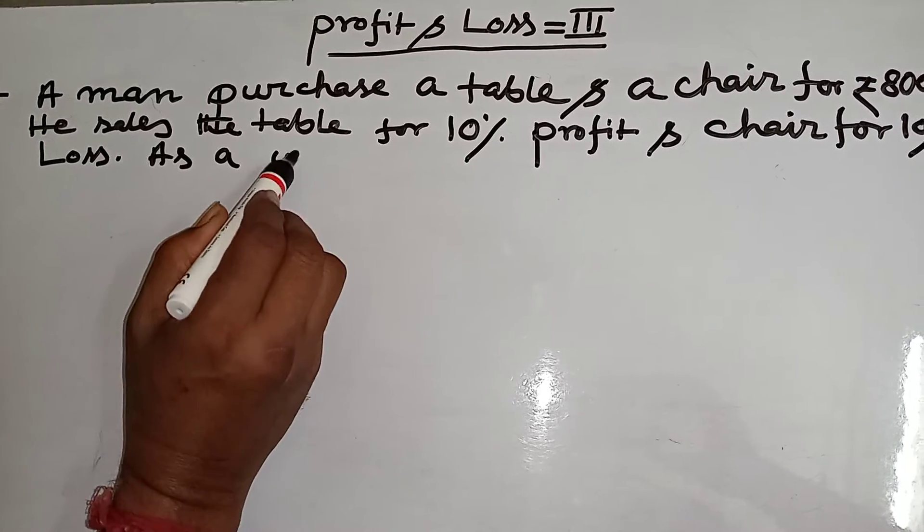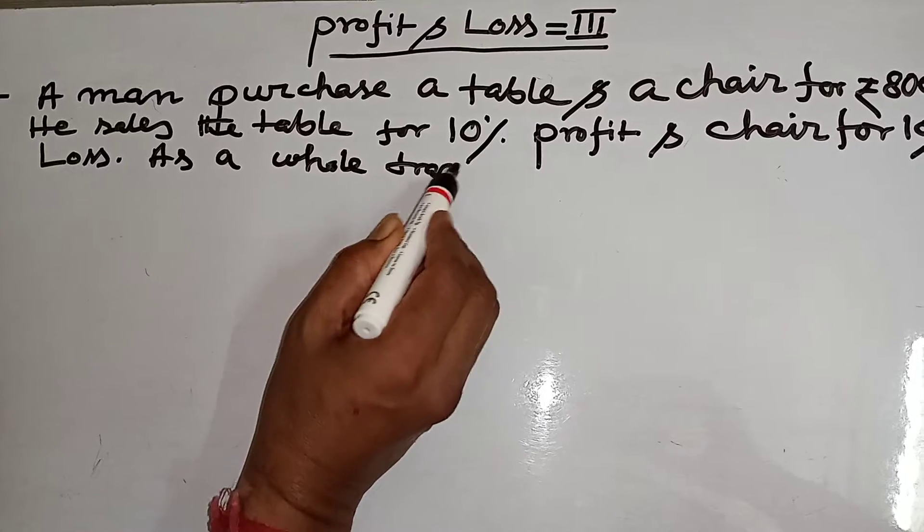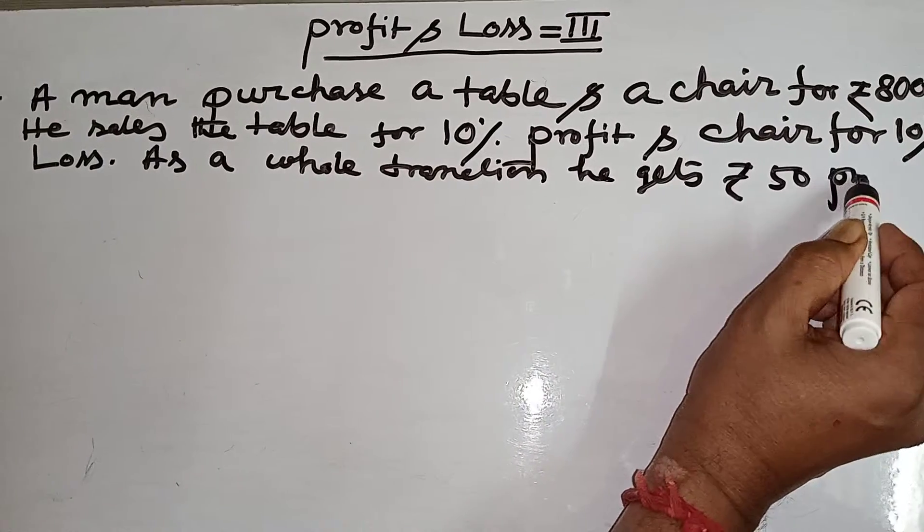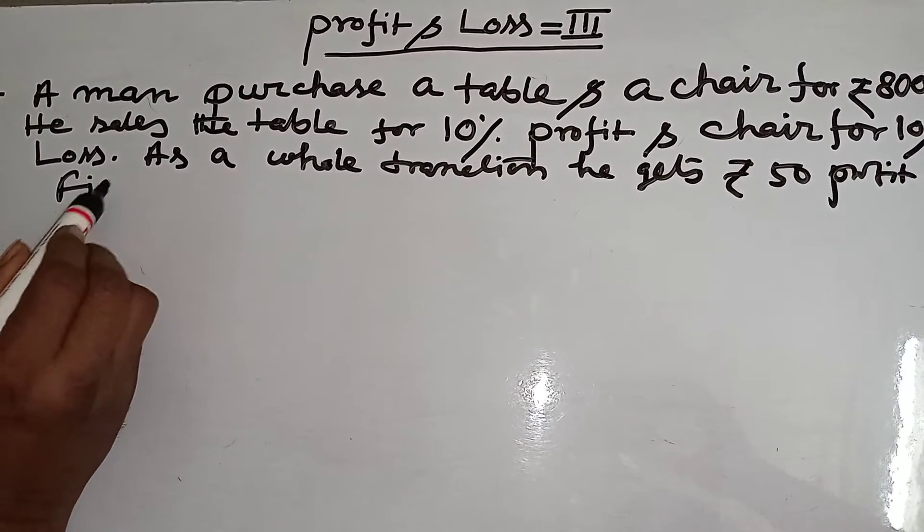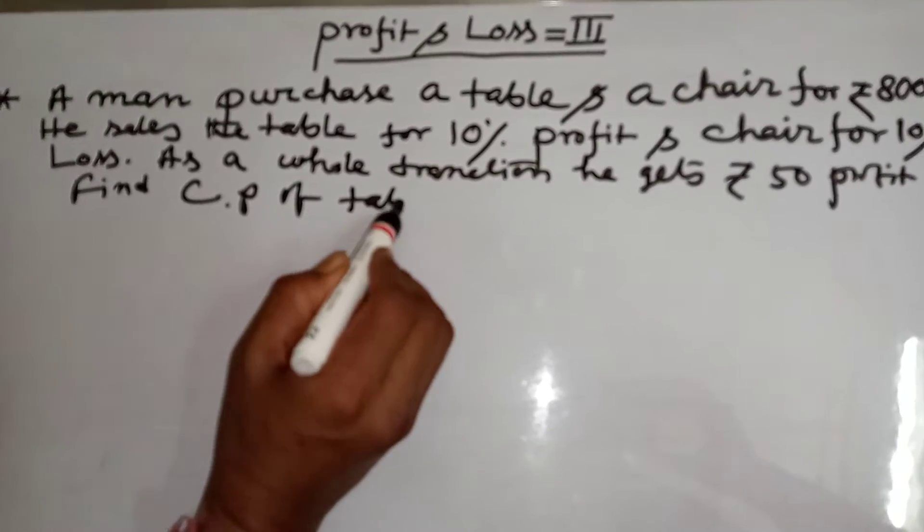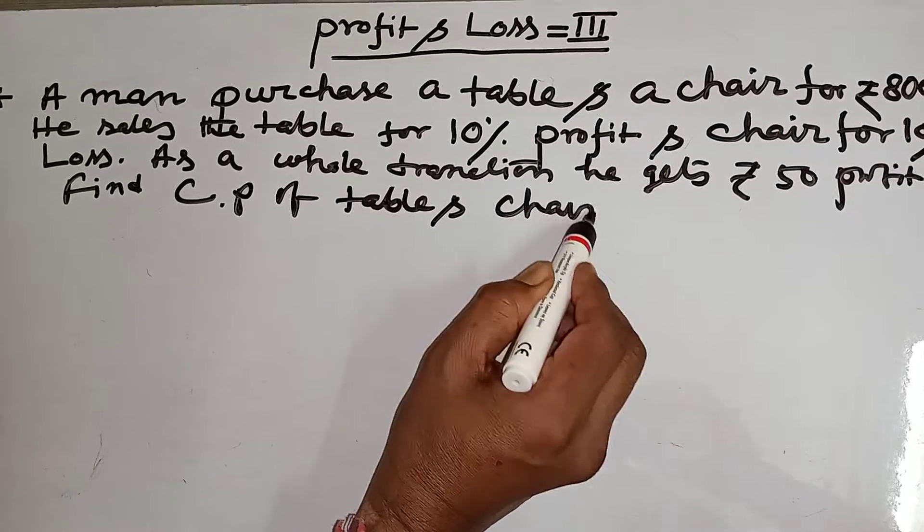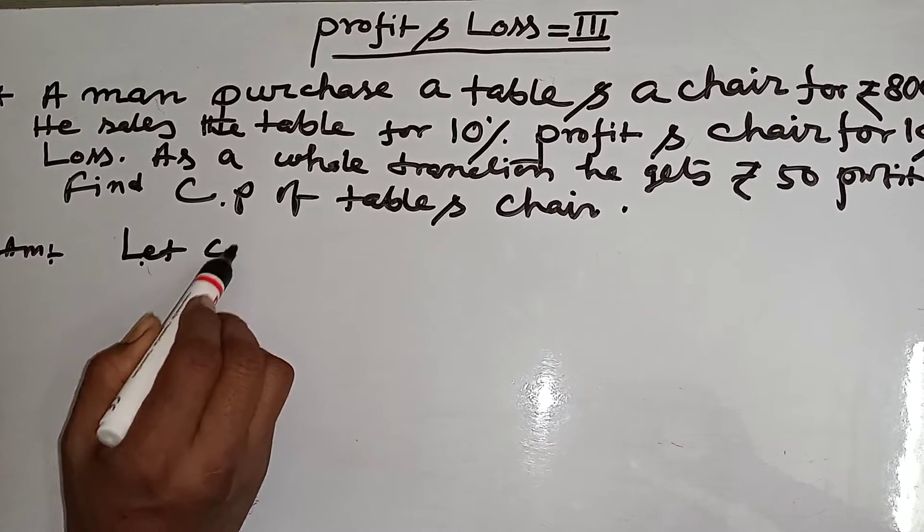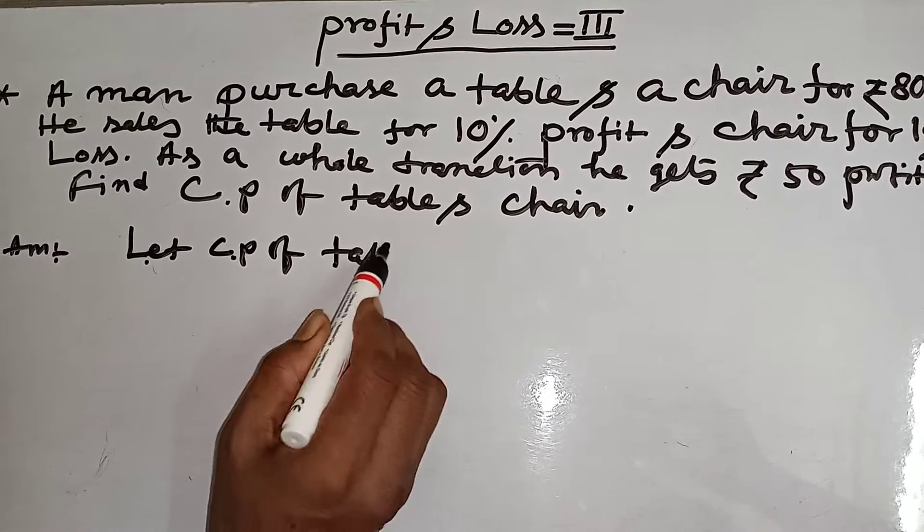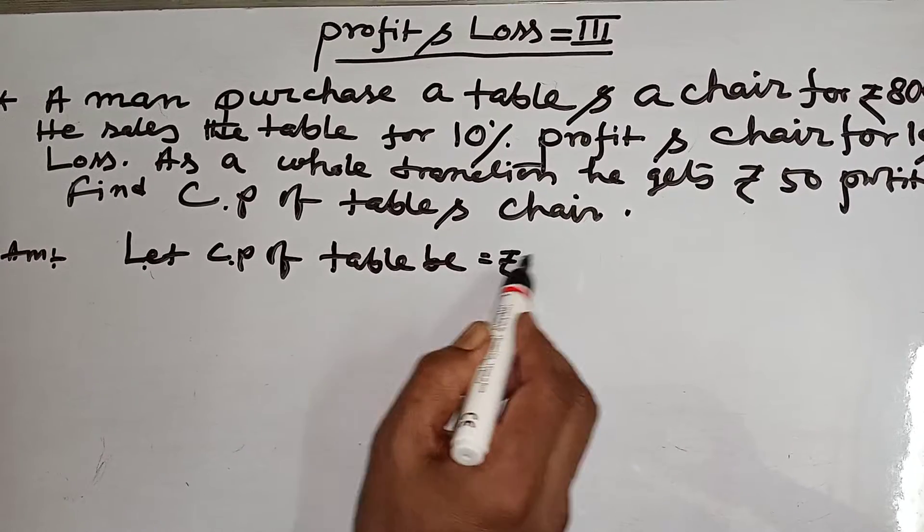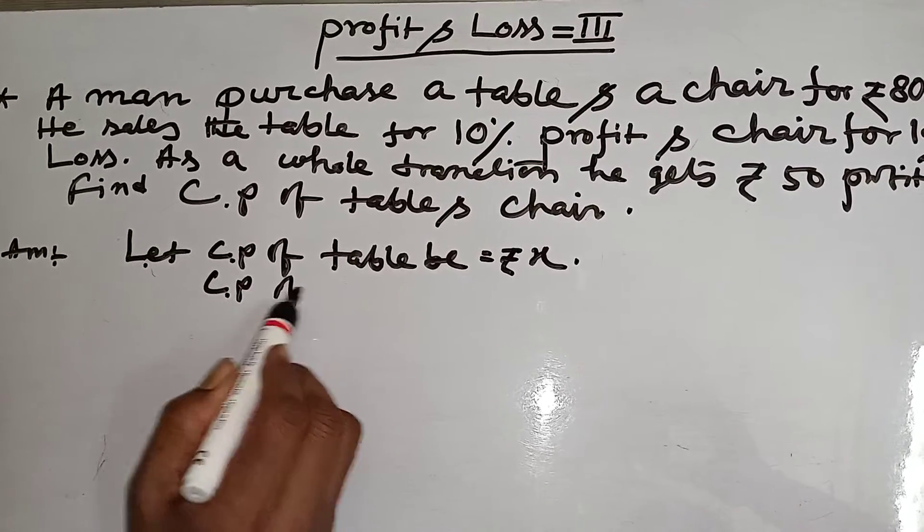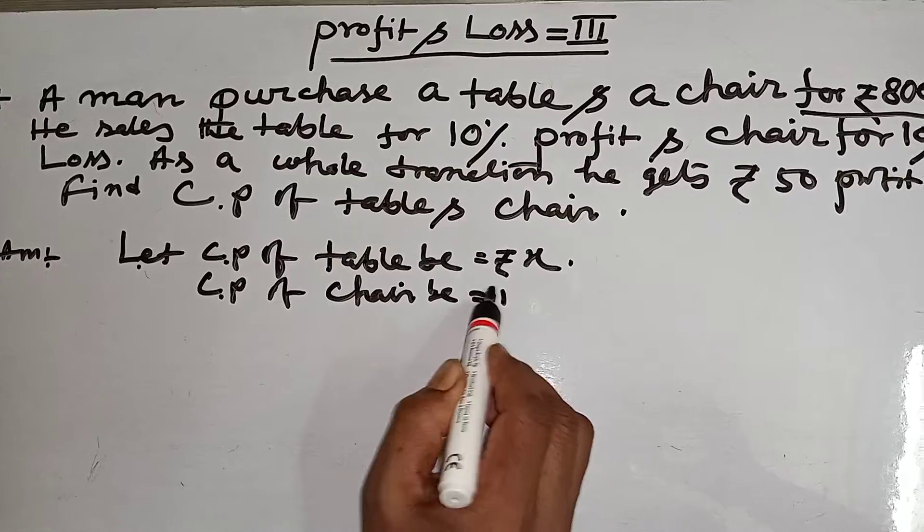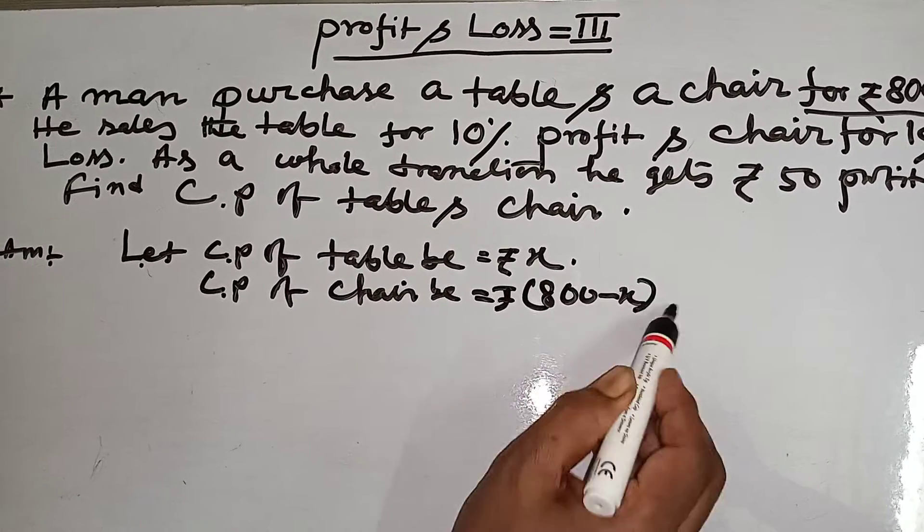As a whole transaction, he gets rupees 50 profit. Find CP of table and chair. Answer: Let CP of table be rupees X. CP of chair will be 800 minus X.